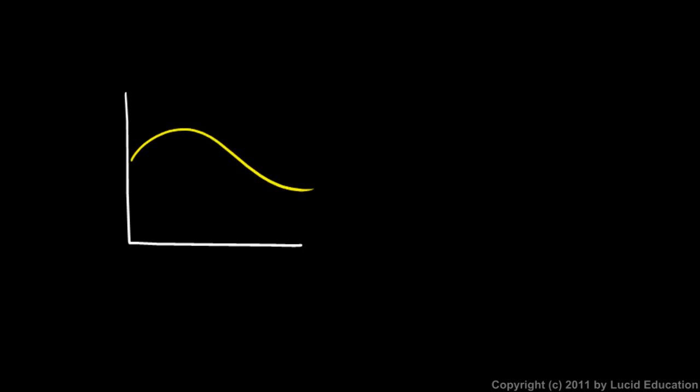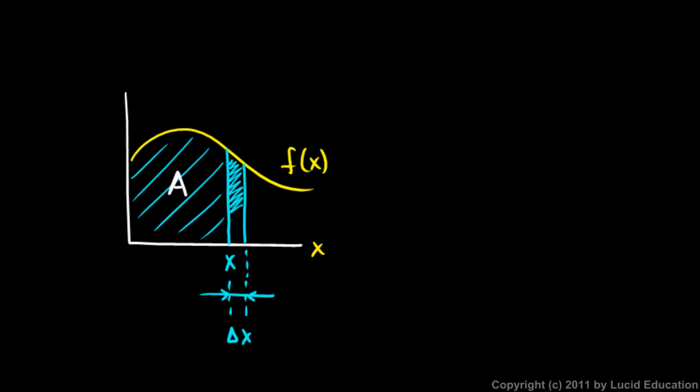Draw some function in here. It could be any function. This is our x-axis and some function of x, and imagine some vertical line here at some x value, and we're dealing with this area here. Now imagine x increasing. So x moves to the right a little bit, so we have this horizontal increment here. That's our delta x.